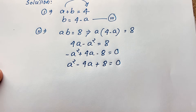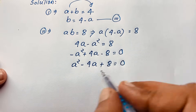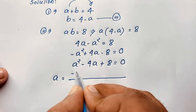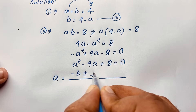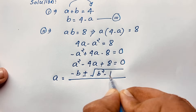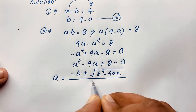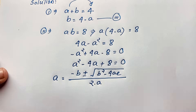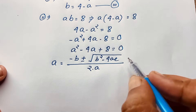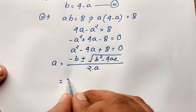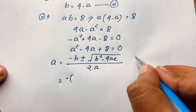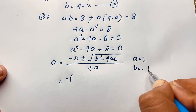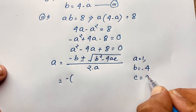Now, how to simplify this quadratic equation? We use the quadratic formula: a equals minus b plus or minus square root of b squared minus 4ac, all over 2a. Here a is equal to 1, b is equal to negative 4, and c is equal to 8.